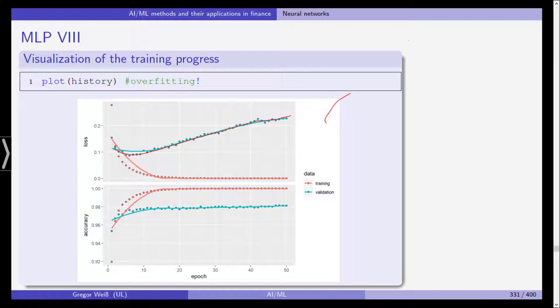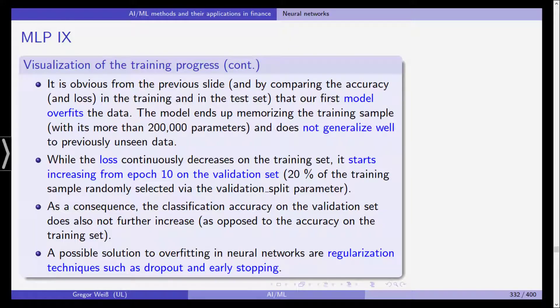This is not surprising given the fact that we have 204,000 parameters and much less data observations. So actually for each data observation we have more parameters and this obviously yields such a highly flexible model, but this is causing the overfitting we can see on this plot.